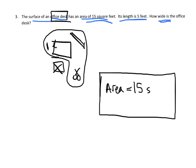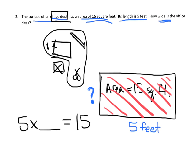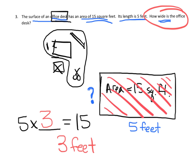We're told the area is 15 square feet and one side length is 5 feet. We need to figure out the other side length. The quick way to calculate area is 5 times the missing number, and that equals 15. What number goes there? It's 3. So the missing length is 3 feet — the office desk is 3 feet wide.